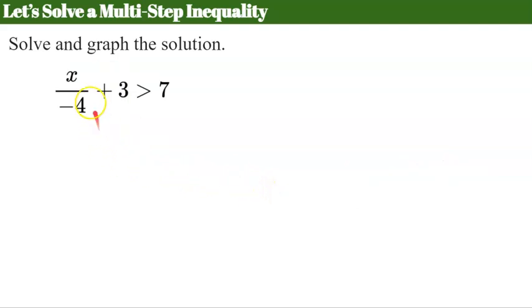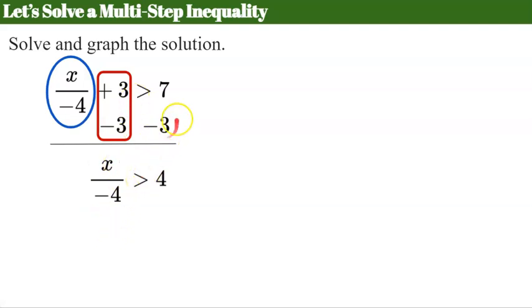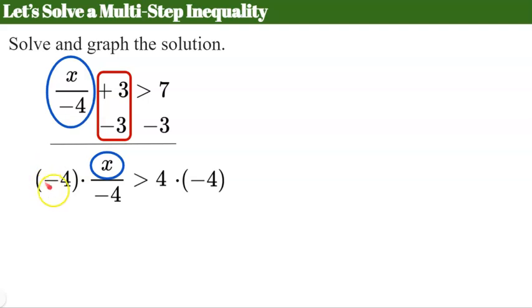Let's try this one together. Again, there's no parentheses so I don't need to distribute. I'm going to identify my variable term. It's being added by 3, so I need to create that zero pair. The inverse of add 3 is to subtract 3 from each side. I have my variable term, I bring down my inequality symbol, and 7 subtract 3 is 4. Now I identify what is happening to the variable — the variable is being divided by negative 4. The inverse of divide by negative 4 is to multiply by negative 4. What I do to the left, I must also do to the right.